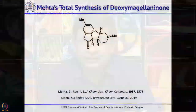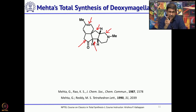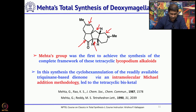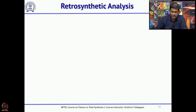Now we will move to another natural product which is not a triquinane, but has a dicyclopentyl substructure plus one six-membered ring and another six-membered ring with a heteroatom — this molecule is called deoxymagalinone. There are two five-membered rings, one six-membered ring, and another six-membered ring which we can call N-methylpiperidine. Since we are talking about triquinanes, I want to discuss the extension of Professor Mehta's methodology to synthesize such molecules. In addition to the standard thermal metathesis, he also used an intramolecular Michael addition as a key reaction to construct the six-membered ring.